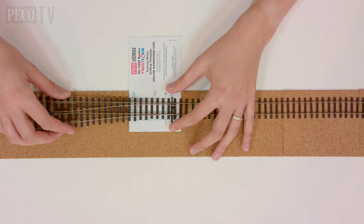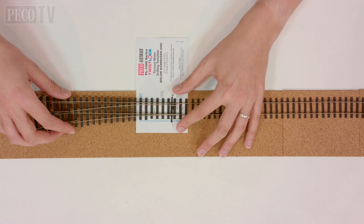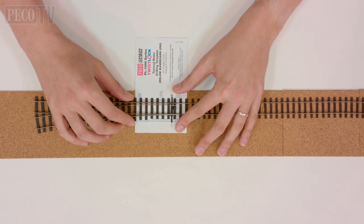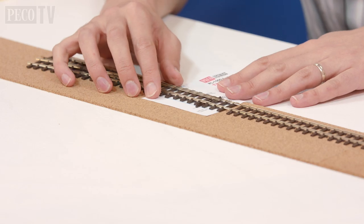Each twist lock motor is supplied with a paper template. This allows you to determine the exact position of the holes needed to fix and install the motor.